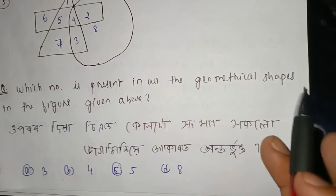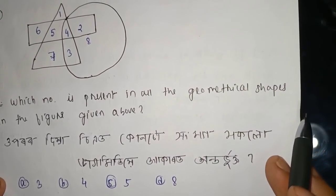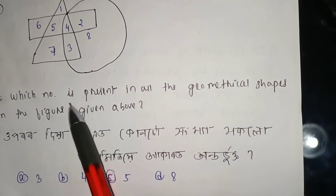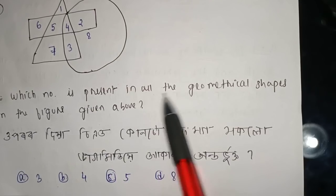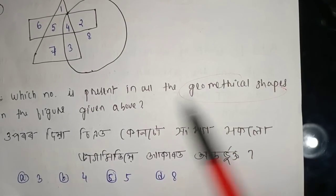Next, the Venn diagram question: which number is present in all geometrical shapes?